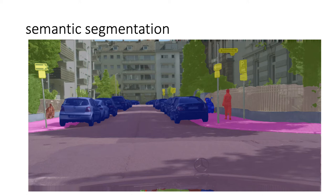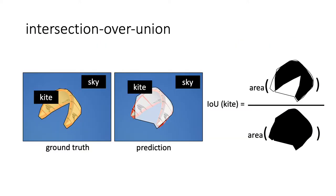Looking at this image, one can ask: is semantic segmentation solved? If given enough data, we can get such results. Well, using Betteridge's law, you probably could have guessed that I don't think so. In my opinion, one of the problems is related to pixel-wise evaluation with intersection over union, and I'll use a toy example to illustrate it.